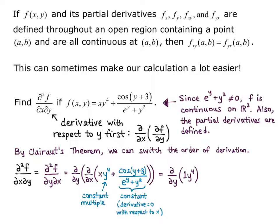So we get the partial derivative with respect to y of 1 times y⁴, and the derivative of that big y term, the constant term, is zero. So now it's an easy derivative. Derivative of y⁴ with respect to y is 4y³, and we're done. We had the option of doing it the other way and using the quotient rule, but it would have just been a lot more work. So Clairaut's theorem can save you a lot of work.